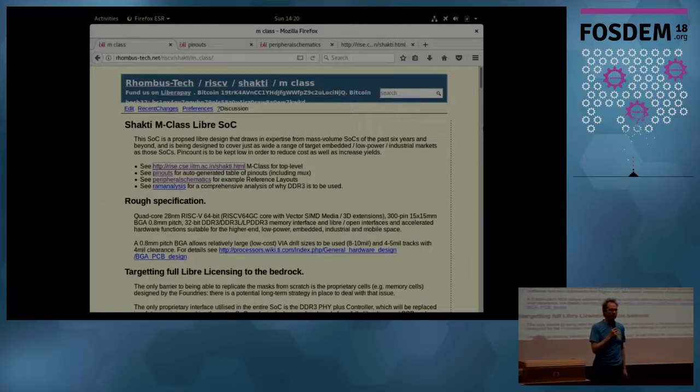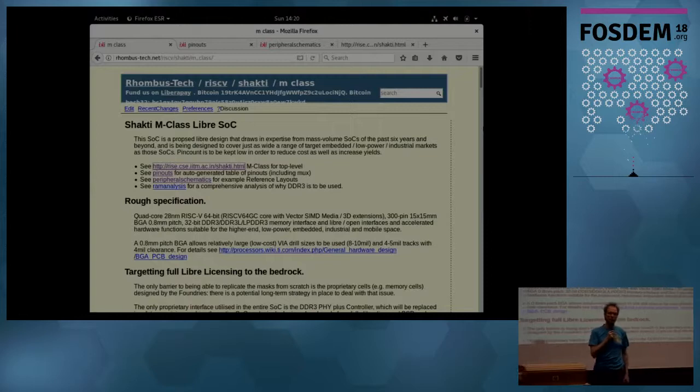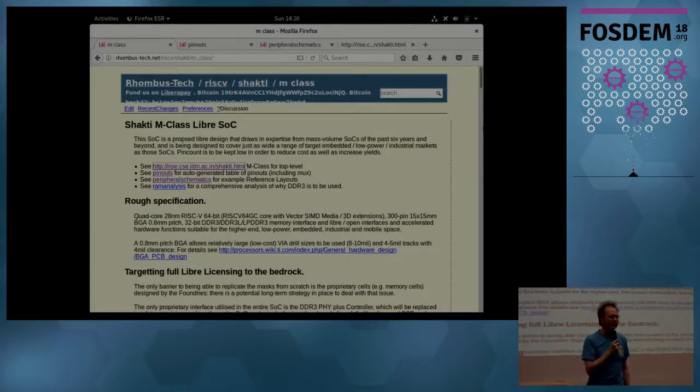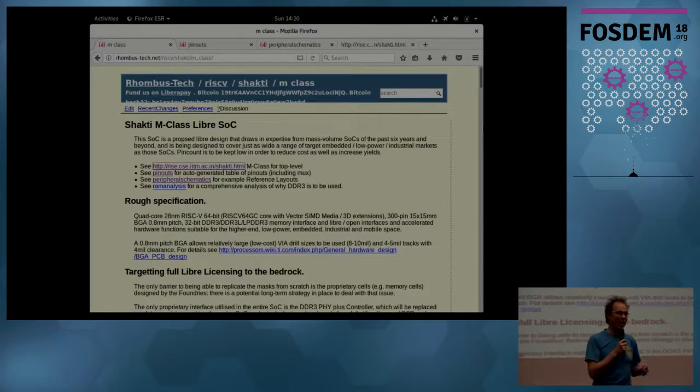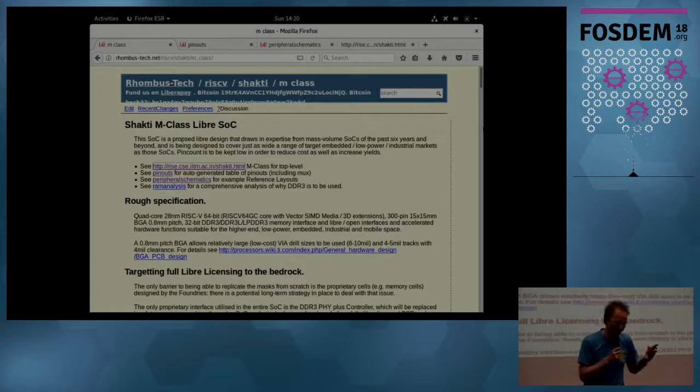About three months ago, on the mailing list for the EOMA 68 project, somebody said there's this Indian group doing a RISC-V core. You should contact them. So I wrote an email and said hello, my name is Luke Lane, I'm a free software developer. I'd be really interested to help you to develop a system on chip which does RISC-V. And this guy responded. Thirty emails later, we got introduced and established that yes, they have unlimited funding by the Indian government, and I'm quoting here, to piss all over Intel and ARM.